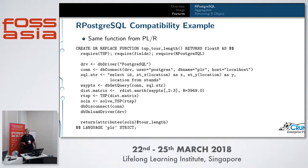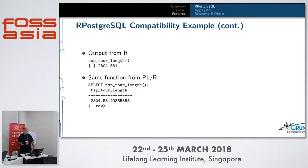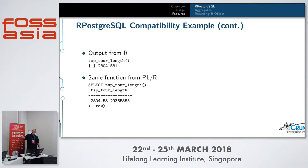On the next slide, this is the same function written for PLR. Because of the R Postgres compatibility, the only thing that really changes is the decoration around the body of the function — everything else is exactly the same. It's just cut and paste. And you get the exact same answer out, because it's the same library doing the same calculation.